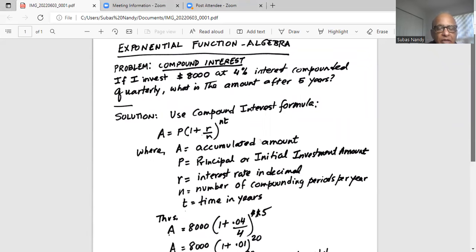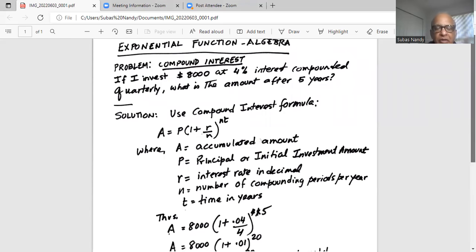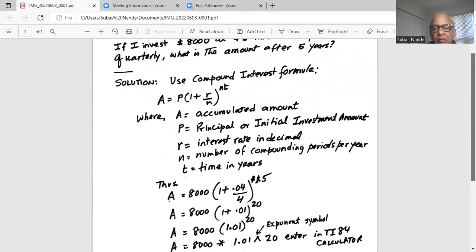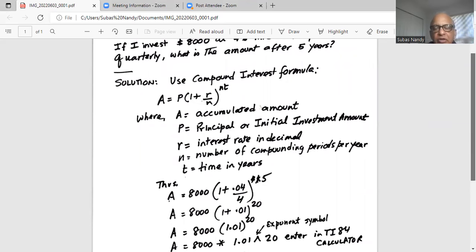What is the exponent? It is n, four quarters per year and I have five years. So n is 4, t is 5. So finally I get amount is equal to 8,000 multiplied by 1 plus 0.01 exponent 20 or 8,000 multiplied by 1.01 exponent 20.